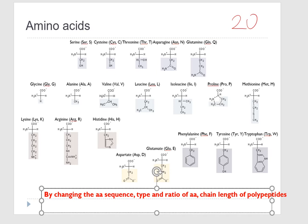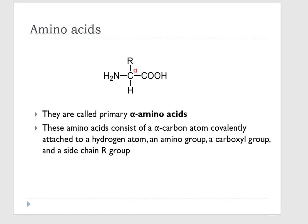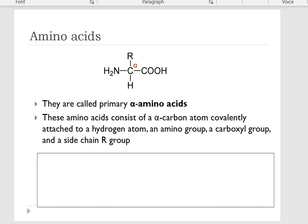Let's see the structure of these amino acids. Chemically, we call them alpha amino acids — why? Because of the presence of an alpha carbon in the structure. Each amino acid has this central alpha carbon that has a hydrogen covalently attached to it. There is also an amino group.